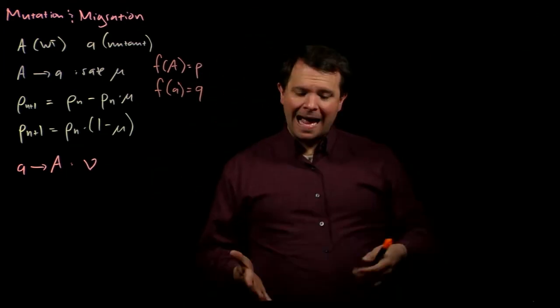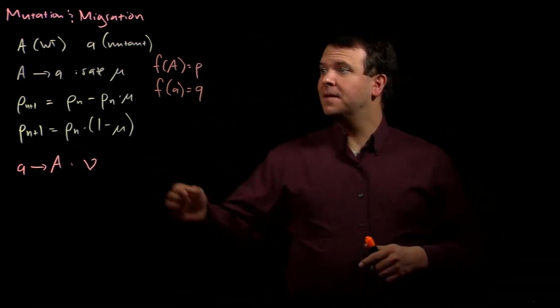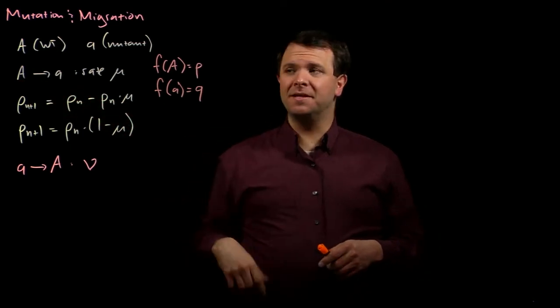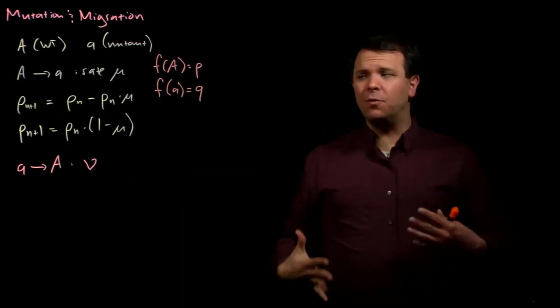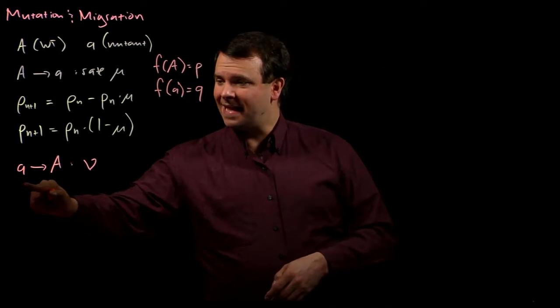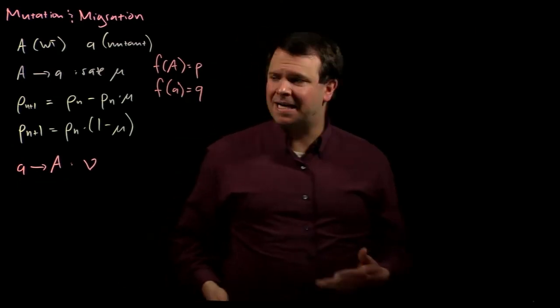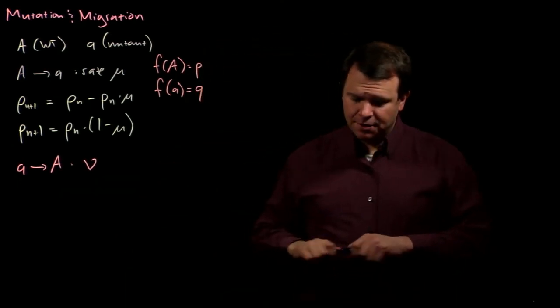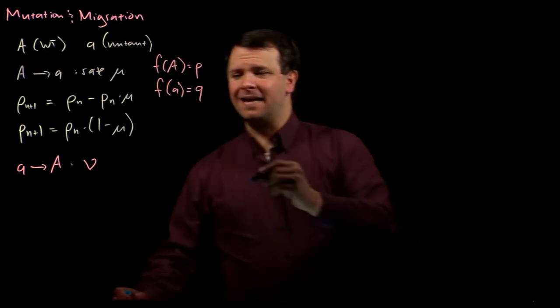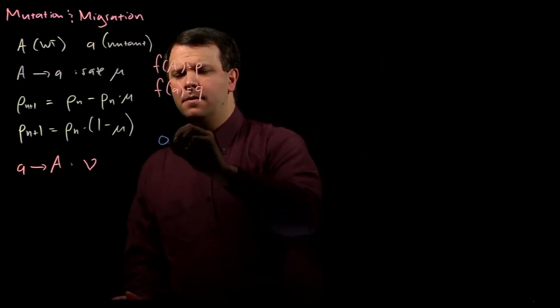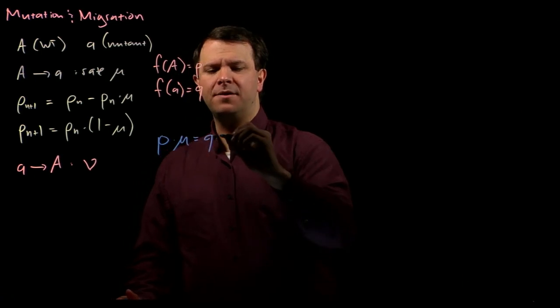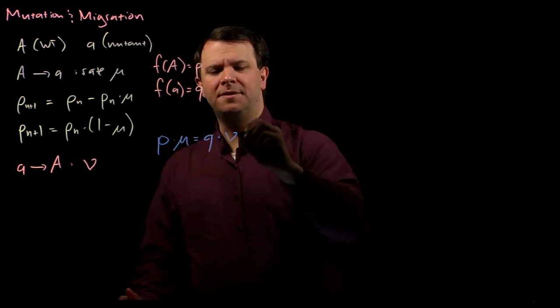then at equilibrium, the rate that big A alleles change to little a is mu is equal to the rate that little a alleles change back to big A alleles. And so, we write that as saying that at equilibrium, p times mu equals q times nu.